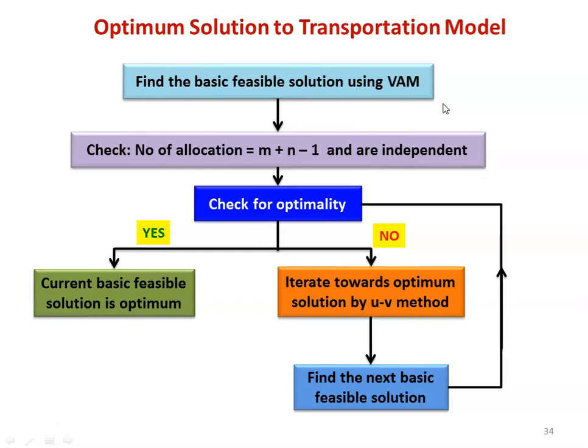If any cell has a negative value in the cell evaluation matrix, the optimality condition is not satisfied. Then we have to iterate towards the optimum solution using the UV method — a mathematical technique developed for calculating the optimal solution in the transportation model. We then find the next basic feasible solution and check for optimality again. This loop continues: starting with Vogel's Approximation Method, check the number of allocations and check for optimality, then stop or proceed to the next iteration based on the result.